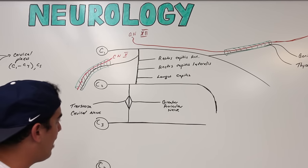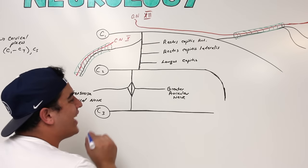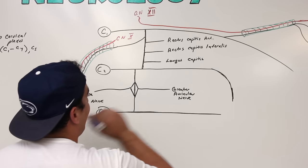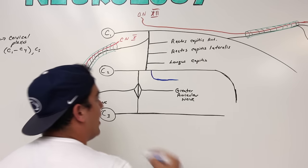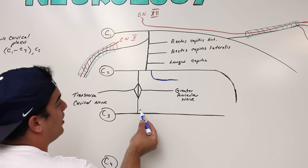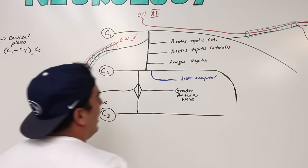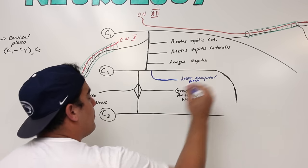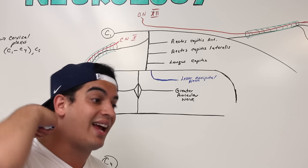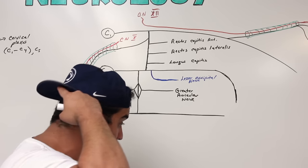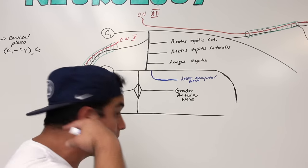There is some controversy, but most research supports that the lesser occipital nerve comes primarily from the C2 branch, though some literature says it also carries C3 fibers. The lesser occipital nerve supplies the skin on the occiput, the posterior aspect of the neck, the lateral posterior aspect of the neck, and even a little bit of the scalp.